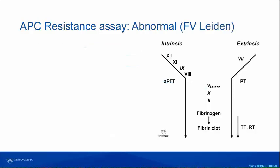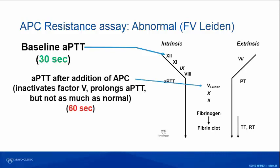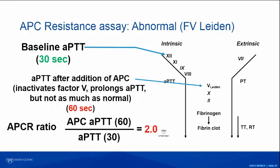In APC resistance, you obtain a baseline APTT, then do the APC APTT — except the factor V is mutated and resists inactivation. Although there's lengthening of the APC APTT, it won't lengthen as much as in a normal person, making the ratio abnormal — below 2.3 in our lab. It's important that if you're running the APC resistance assay, you verify the reference range in your own laboratory before implementing it.